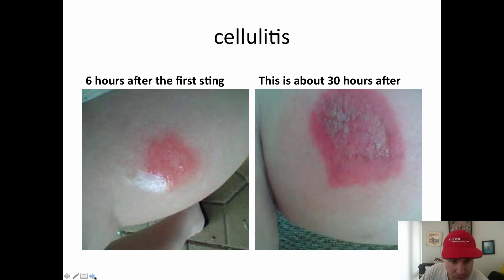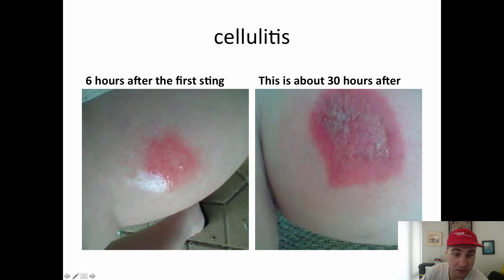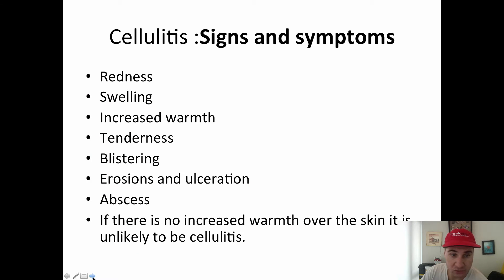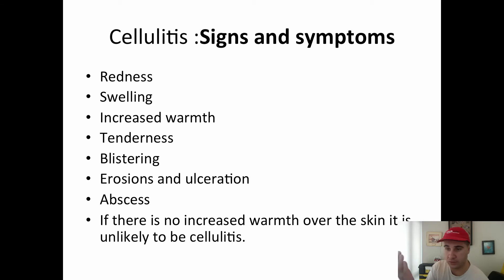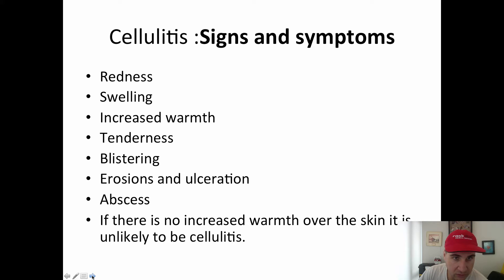Cellulitis is basically a redness of the skin. Here you can see it started from a bug bite — that image was six hours after, and then 30 hours later. You can see it spreads pretty quickly. One of the major signs to pay attention to is increased warmth over the skin. You take the back of your hand, which is more sensitive, and touch the red area versus the skin outside it — if you feel more warmth over the red area, it's likely cellulitis, especially with the other symptoms present.